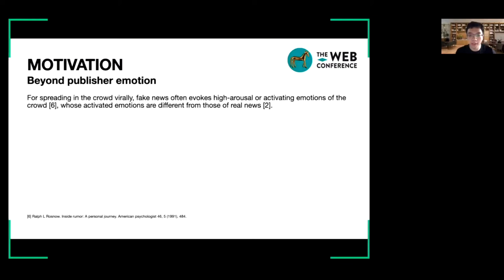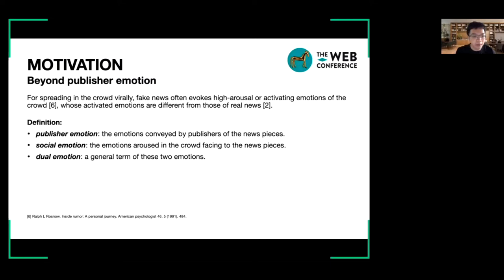To describe the two emotions clearly, we define them respectively as publisher emotion, which means the emotions conveyed by publishers of the news pieces, and social emotion, which means the emotions aroused in the crowd facing the news piece. And we adopt dual emotion as a general term of these two emotions.